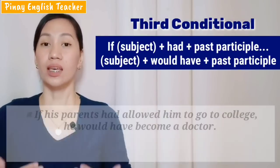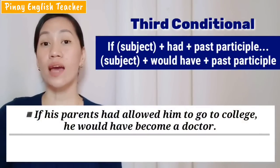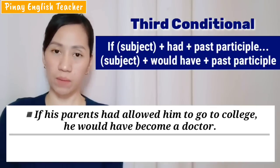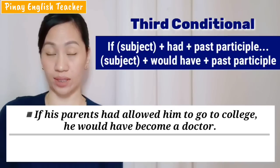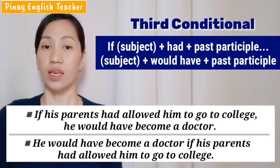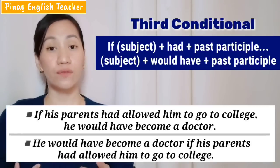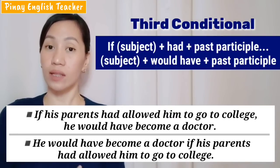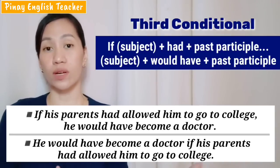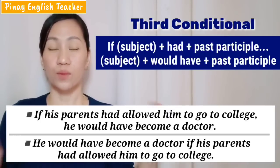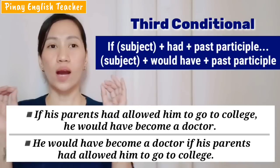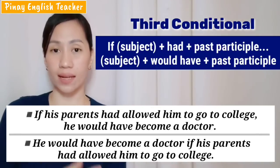I'll give you another example sentence. If his parents had allowed him to go to college, he would have become a doctor. Or he would have become a doctor if his parents had allowed him to go to college. Kung pinagaan lang sana siyang mag-aral ng mga magulang niya sa college, edi sana naging doktor na siya. The third conditional is used for talking about things that didn't happen — we're just imagining the result of something if it had happened. Ini-imagine na lang natin kung ano sana yung nangyari kung ginawa o kung nangyari yung isang bagay.